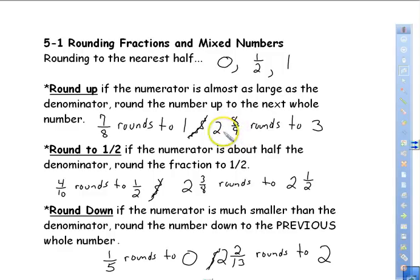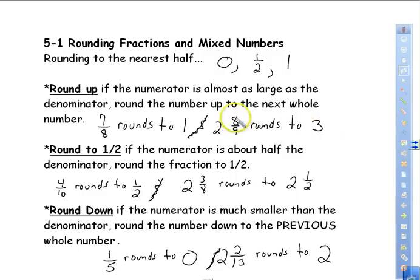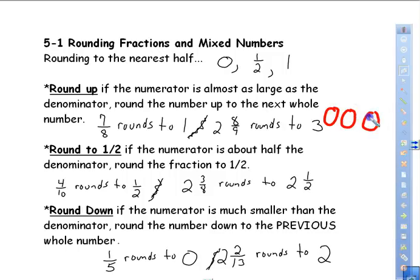For a mixed number, two and 8/9: we have nine slices total and eight remaining, so this rounds to three. The two represents two whole pizzas already there, and the third pizza has only one piece removed — eight others are remaining — so we have almost a total of three.